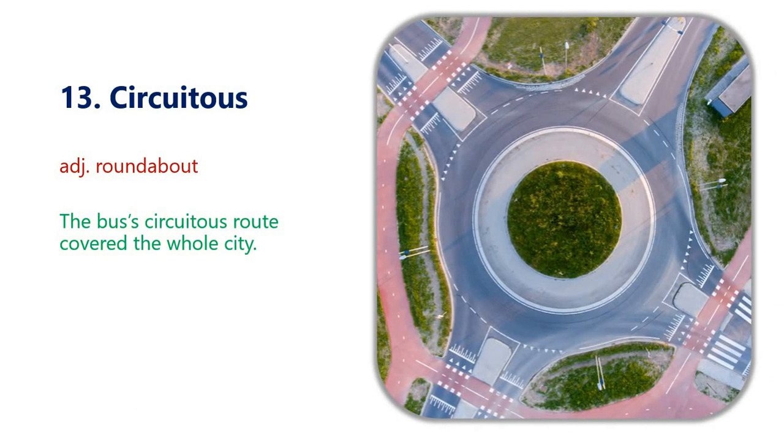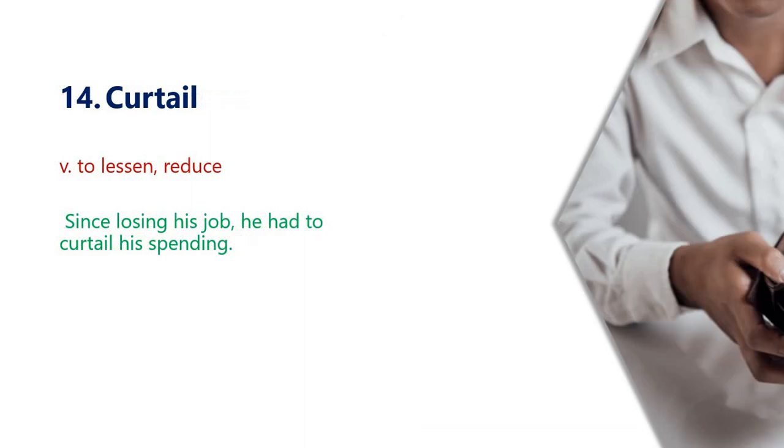The third word is circuitous, which means roundabout. For example: the bus's circuitous route covered the whole city. In this picture we can see there are four roundabouts.